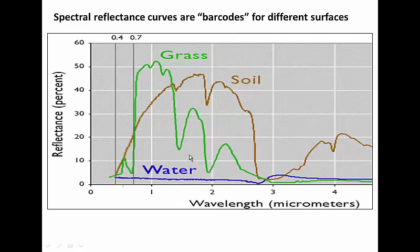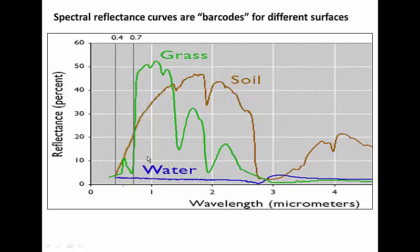What's important about that is that surface types, surface materials, have different reflectance in each of those wavelength regions. So this is called a spectral reflectance curve and it shows the fraction of light reflected by grass, soil and water at each different wavelength respectively.